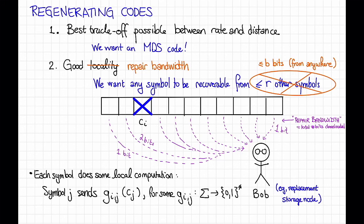That is, for every i and j, there's some function g_ij, which maps the alphabet sigma to some bit string of some length. And what symbol j is going to send is g_ij evaluated on its symbol, c_j. Here, i is the identity of the failed node. So it's okay if these functions depend on which node we're trying to repair. In the distributed storage example, we imagine that this information can be broadcast cheaply.